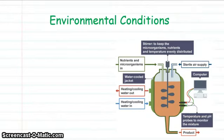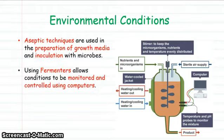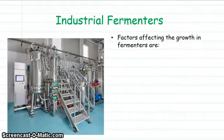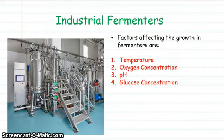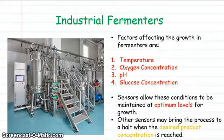In the fermenter, regarding environmental conditions: firstly, aseptic techniques are used to set up the growth media — you don't want contamination by other microbes. Using modern fermenters allows the conditions to be monitored and controlled using computers. Industrial microbiology involves fermentation referring to aerobic and anaerobic growth of microbes on a large scale. Inside industrial fermenters, the factors affecting growth are temperature, oxygen concentration, pH, and glucose concentration. All these are monitored using sensors to keep things at an optimum level for maximum growth, and when the desired concentration of product is made, the whole process can be brought to a stop.